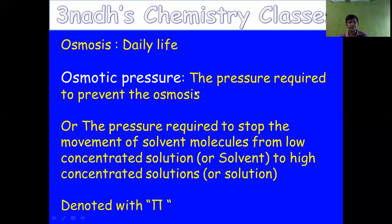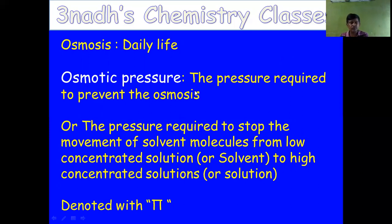Osmotic pressure is the pressure needed to be applied on the high concentrated solution to prevent osmosis. When osmosis is occurring, if we apply some pressure on the high concentrated solution, osmosis stops. The pressure required to prevent osmosis — or to stop the movement of solvent molecules from the low concentrated to the high concentrated solution through the semi-permeable membrane — applied on the high concentrated solution, is called osmotic pressure. It is denoted by the letter π (pi).